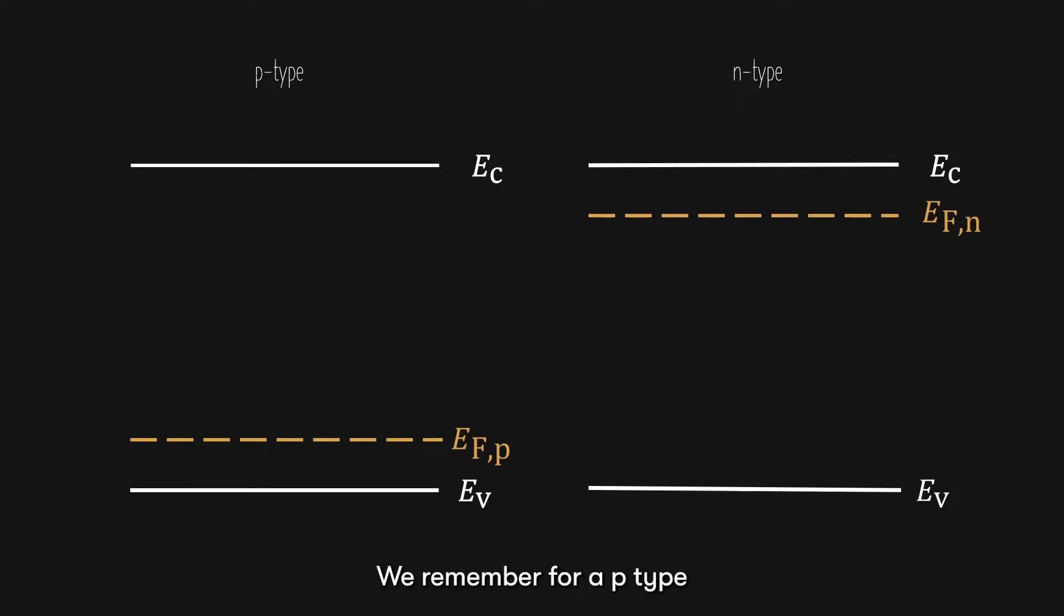Remember, for a p-type semiconductor, the Fermi level is closer to the valence band, and for n-type material, the Fermi level is closer to the conduction band. So, the question really is, what happens if you combine these two materials together? How would the conduction and valence bands of these two materials connect together?